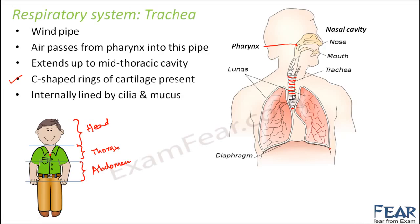The trachea is internally lined by cilia and mucus, which help block dust particles and prevent respiratory organs from infection by microorganisms or germs. The entire respiratory system has a lining of cilia and mucus so that as much dust as possible is removed, ensuring the air that finally reaches the lungs is clean and free of impurities.